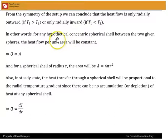In other words, if we consider any hypothetical concentric spherical shell between the two given spheres, the heat flow per unit area will be constant. Therefore, we can conclude that the total heat flow is actually directly proportional to the area of that concentric spherical shell. And the area of the spherical shell of radius R is simply 4πR².